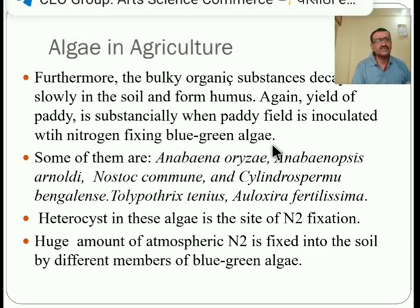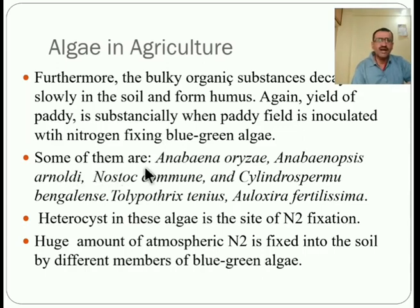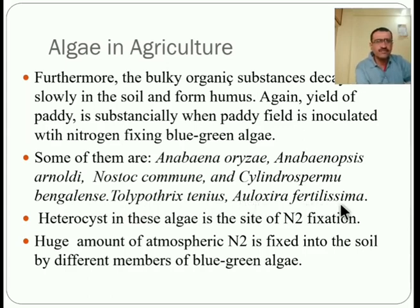Nitrogen is available in the atmosphere but cannot be directly consumed by plants. Blue-green algae convert atmospheric nitrogen into a simpler form usable by plants. Some examples include Azabina oryza, Anabaena dopsis, Arnoldii, Nostoc commune, and Cylindrospermum bengalense, Tolypothrix tenuis, and Alaosira fertilissima — all blue-green algae mostly used in paddy fields.